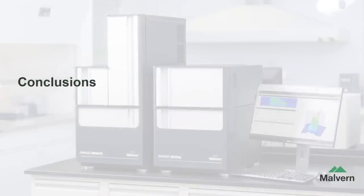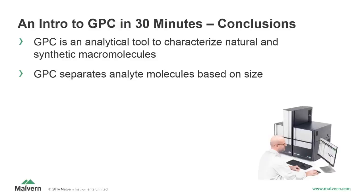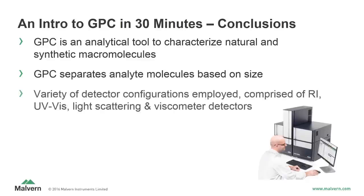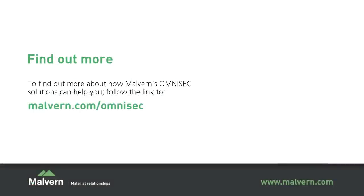And now to wrap up with some conclusions. GPC is the most common analytical tool for characterizing natural and synthetic macromolecules, from materials as diverse as plastics and rubbers to proteins and peptides. GPC is a technique that separates analyte molecules based on molecular size, and it is part of a larger class of techniques called size exclusion chromatography. A variety of detector configurations can be used, usually employing some combination of refractive index, UV-Vis or photodiode array, light scattering, and viscometer detectors. Conventional calibration, universal calibration, and advanced detection are the three prominent analysis methods in order of increasing sophistication, used to obtain different levels of molecular characterization. Thank you for listening. For more information, please visit www.malvern.com.